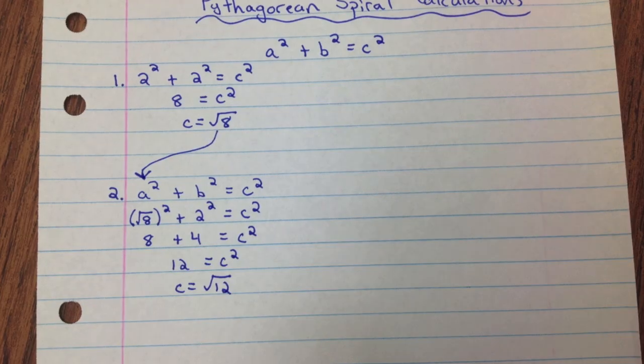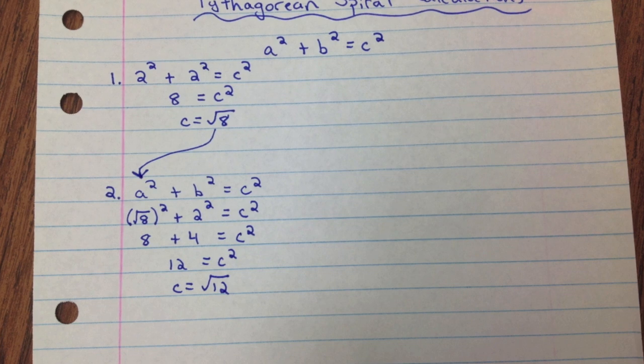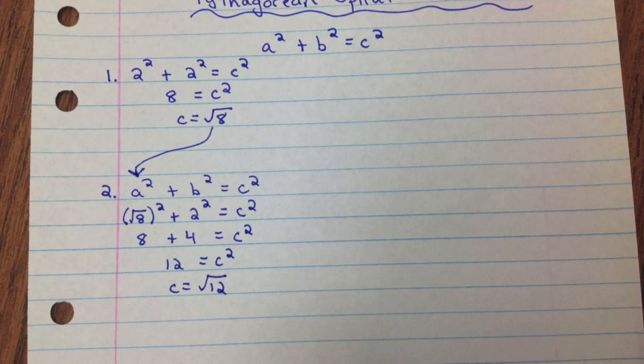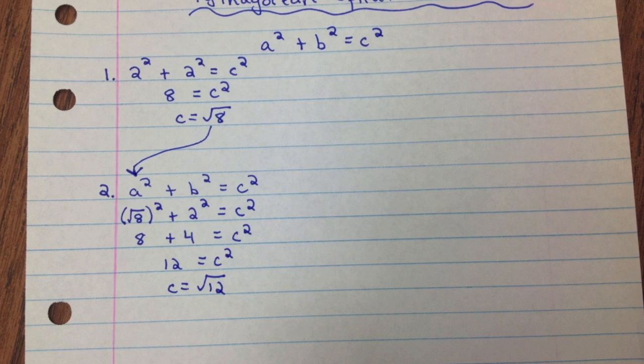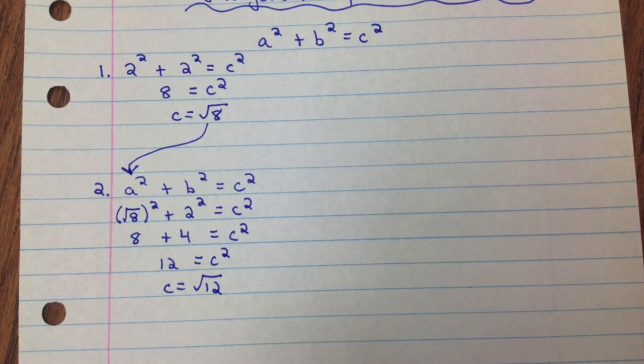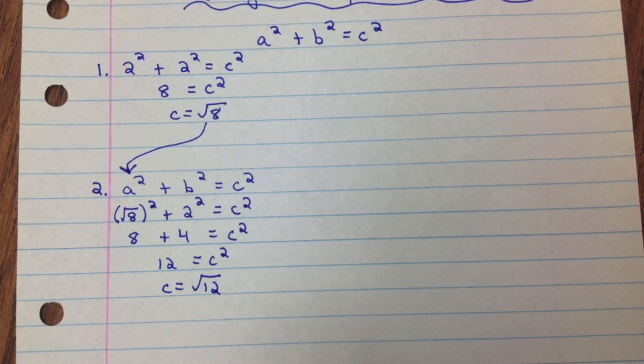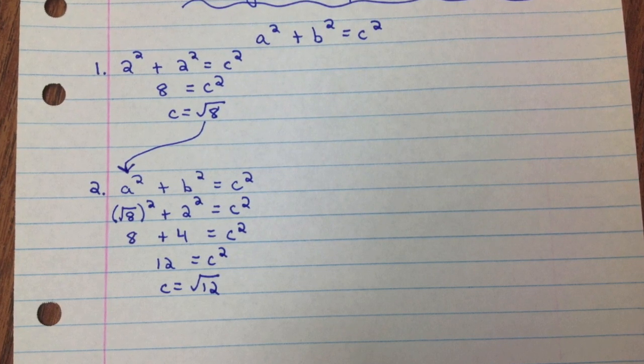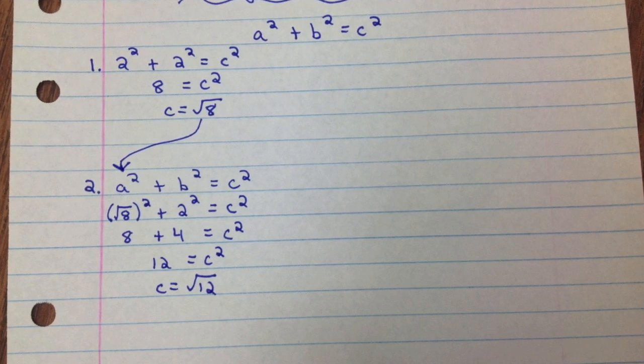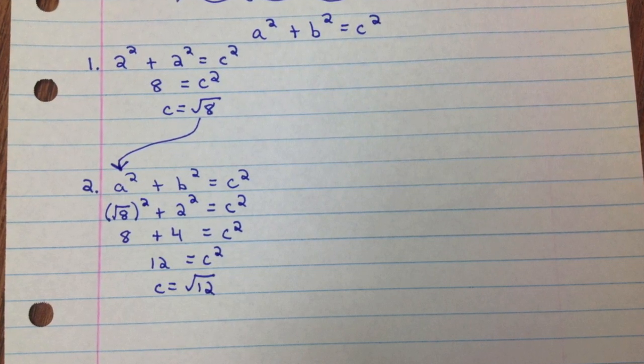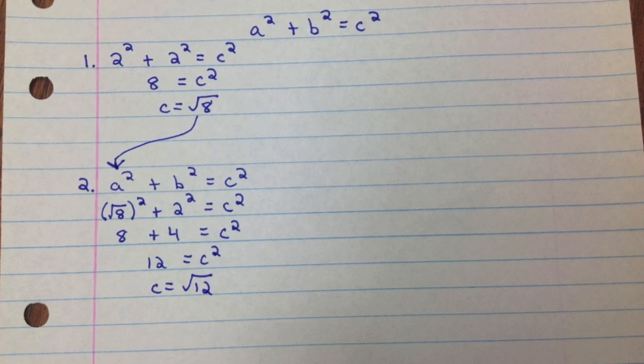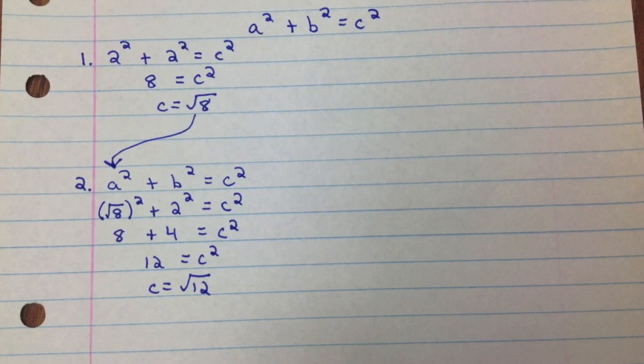Now to calculate the hypotenuse of the second triangle, remember, the base of the second triangle is the hypotenuse of the first triangle. So I'm going to plug in the square root of 8, which I got for the hypotenuse of triangle 1. And I'm going to plug it into the base of triangle 2. And then all of my triangles, the other leg is always 2 cm. So I'm always adding 2 squared. So I have 8 plus 4 equals 12. And then C equals the square root of 12.